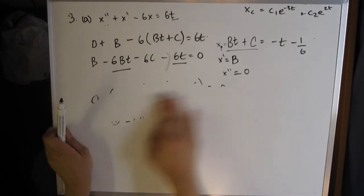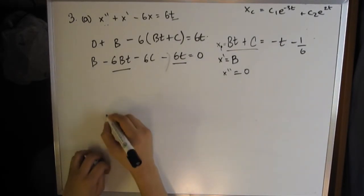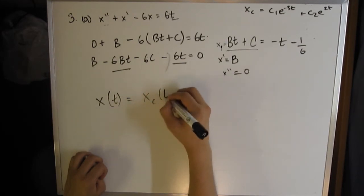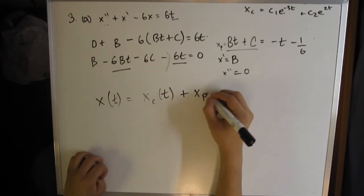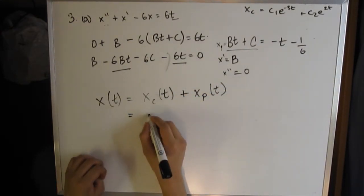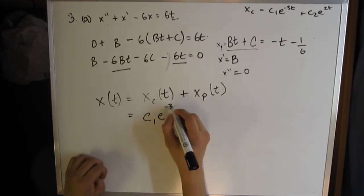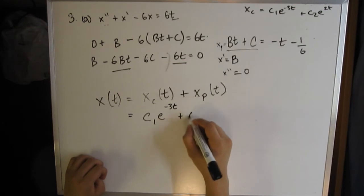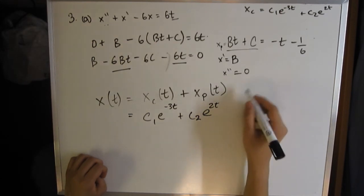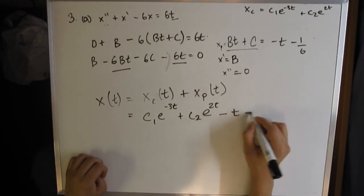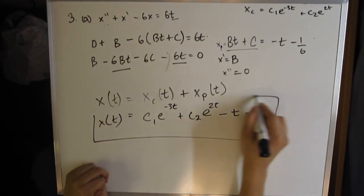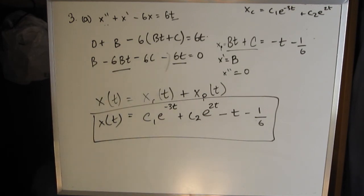The final answer is the sum of the first two equations we found. x(t) = xc(t) + xp(t). We solved for both, so substitute that in: c₁e^(-3t) + c₂e^(2t) - t - 1/6. That's your x(t). They haven't given us initial conditions, so we stop here. That's your final answer for 3a.